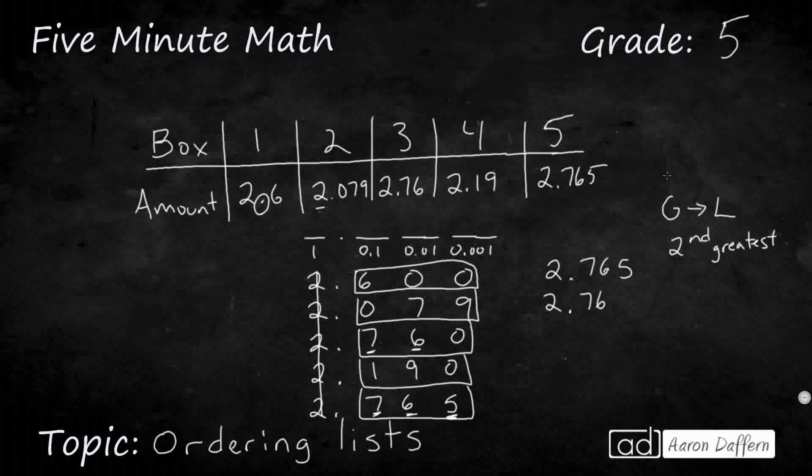Now my next is going to be this six. So 2.6 tenths. Then I've got that one, 2.19 hundredths. And then finally I've got 2.079 thousandths. So that's my order from greatest to least. I'm needing to find the second one, so I just count down and here is my answer. 2.76 hundredths is my second largest number.